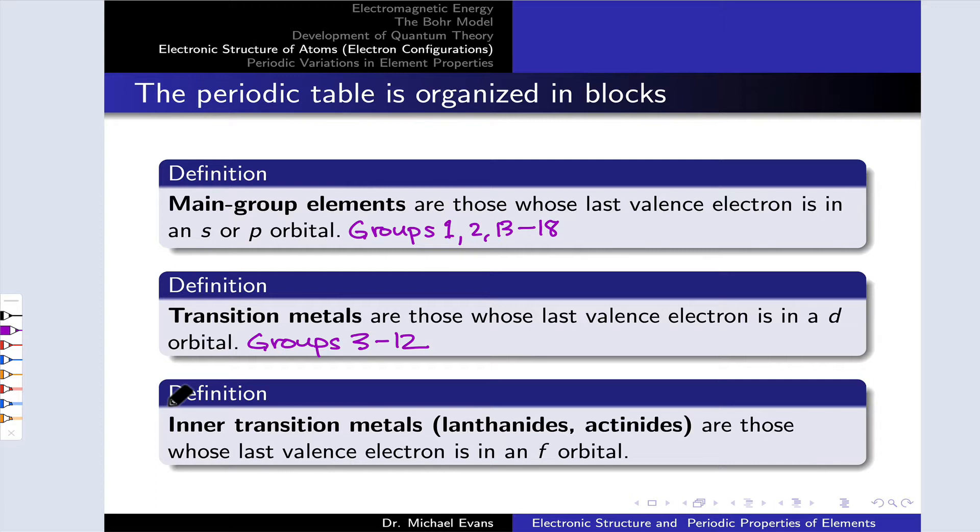The inner transition metals, which are sort of inside the transition metals in a way, are the lanthanides and actinides, and in these atoms the last valence electron, quote-unquote, is in an f orbital.